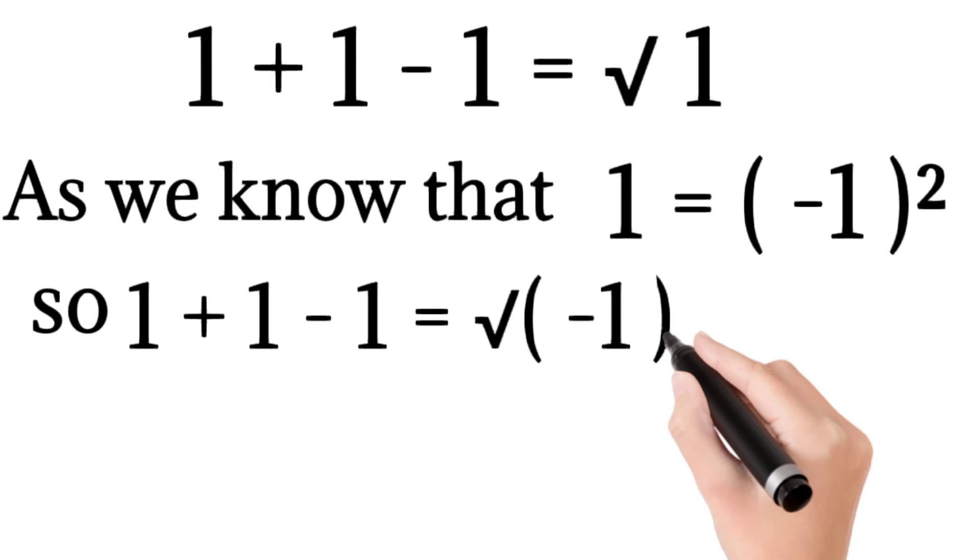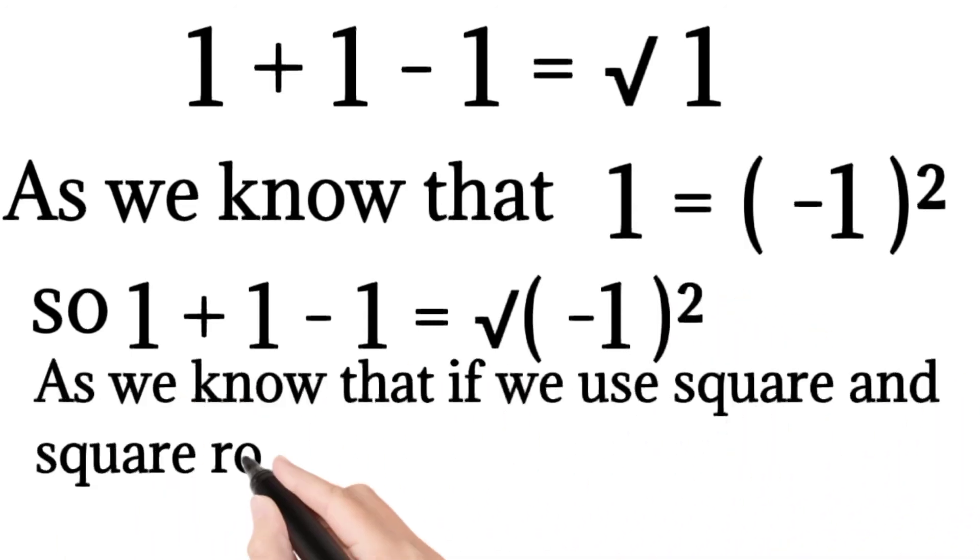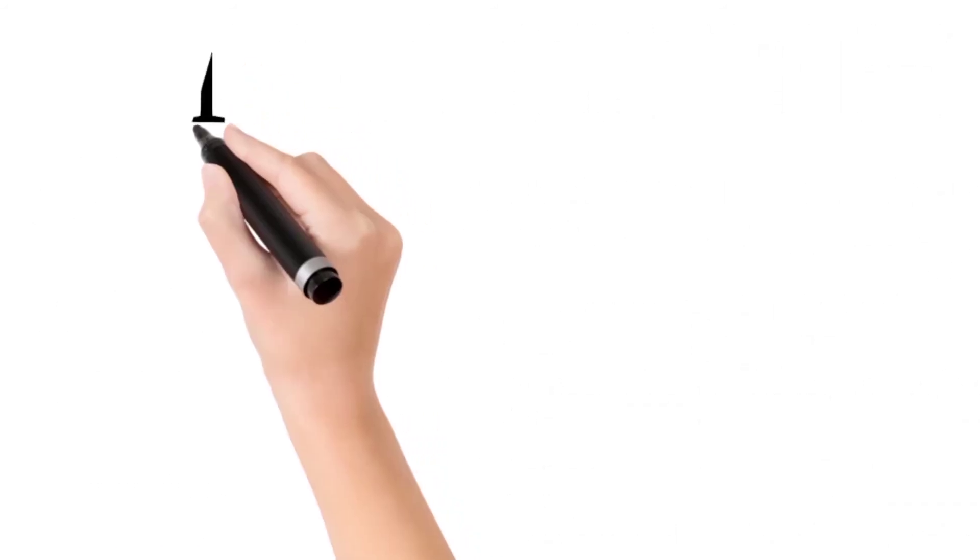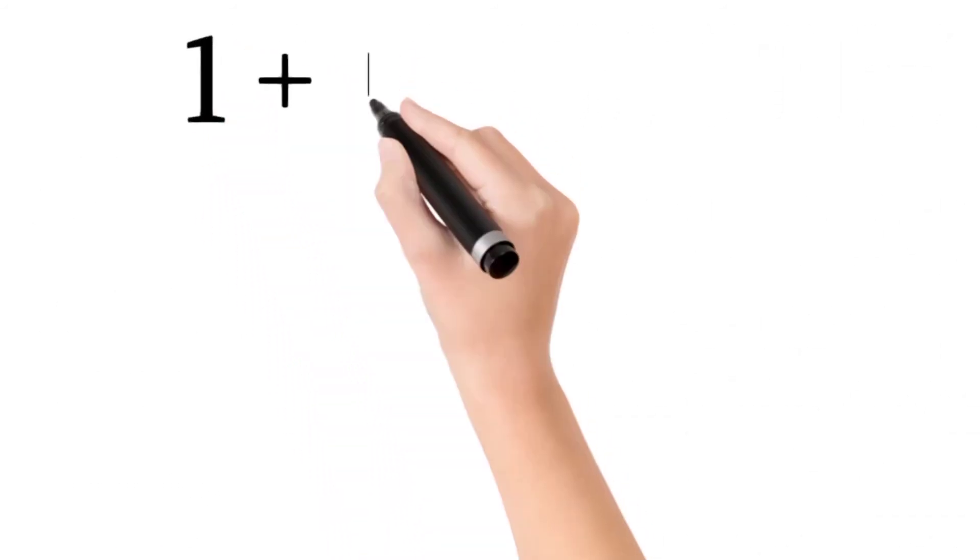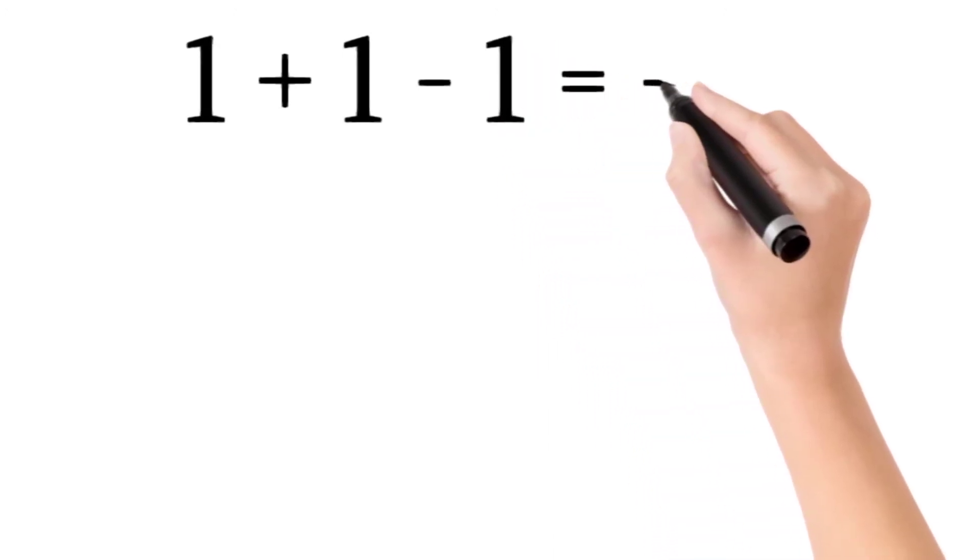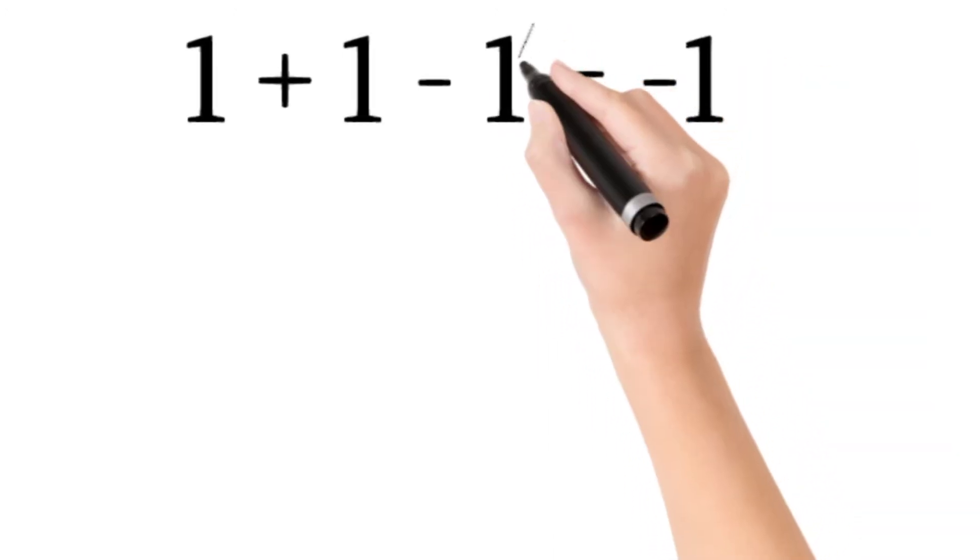Square root of square root of squared... As we know, if you use square and square root together, they cancel each other. Now we have the new equation: 1 + 1 - 1 = -1.